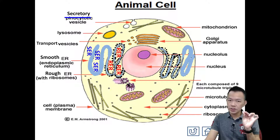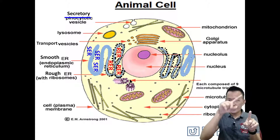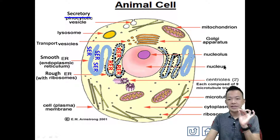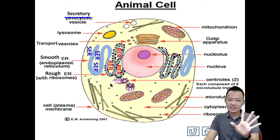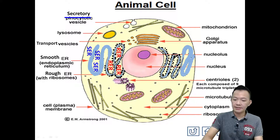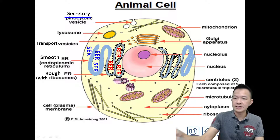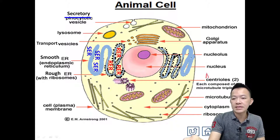Another structure - normally they come in pairs. It's like a gear, like a car gear. This is centriole. And just animal cells have it, so you can label here - animal cells only. Centriole is only available in the animal cell.